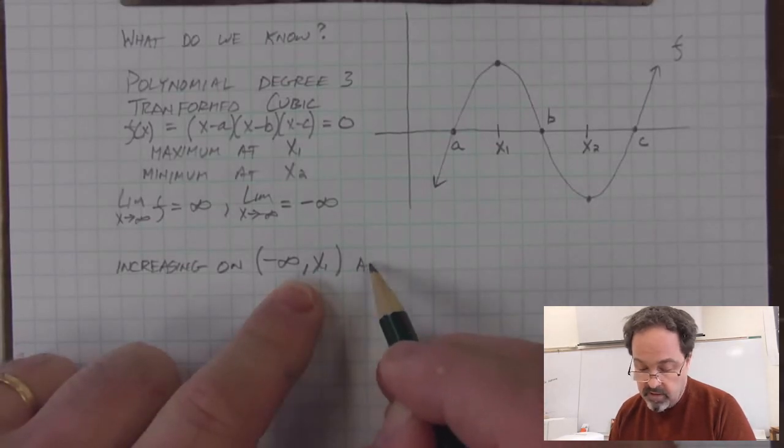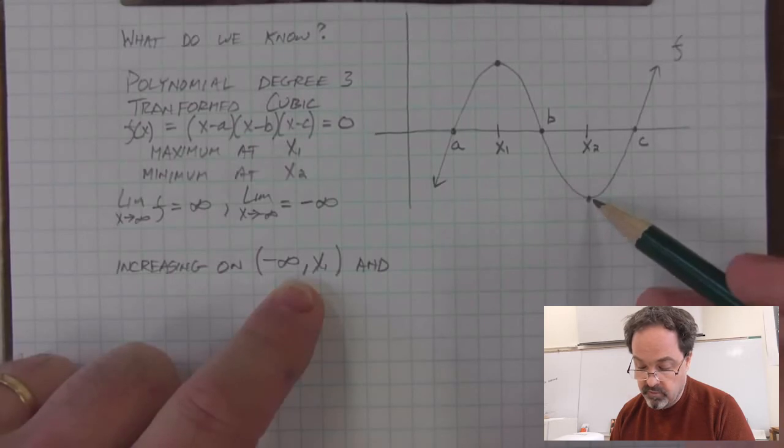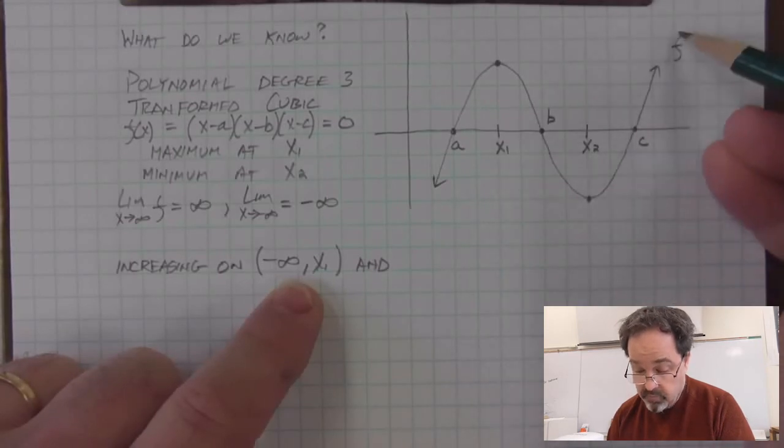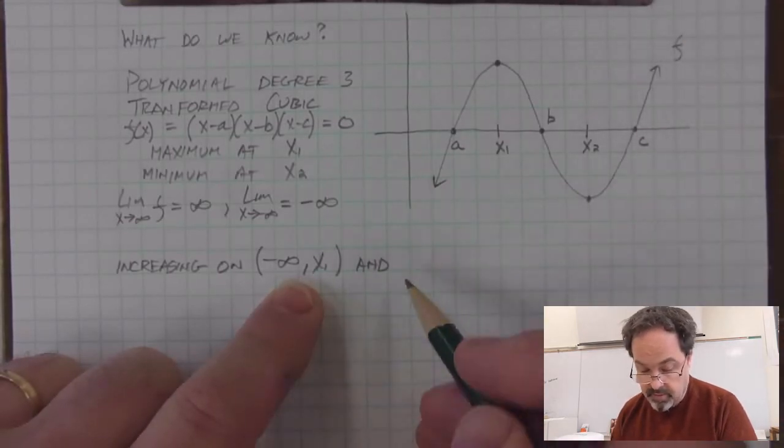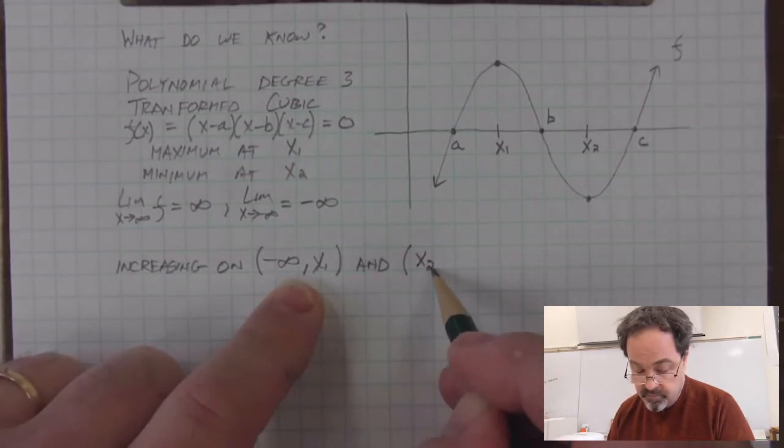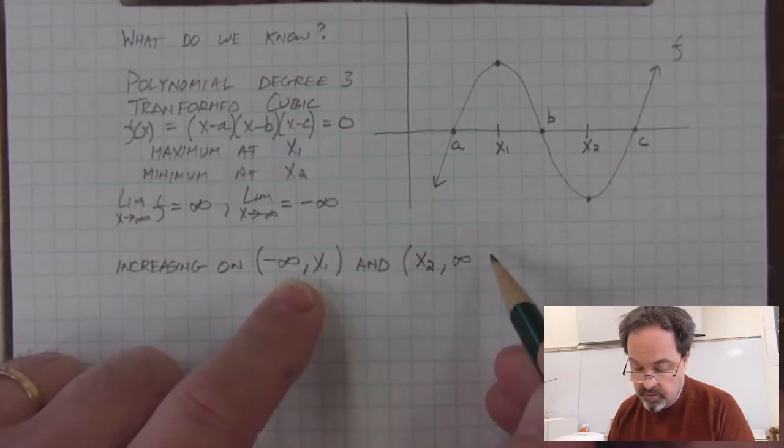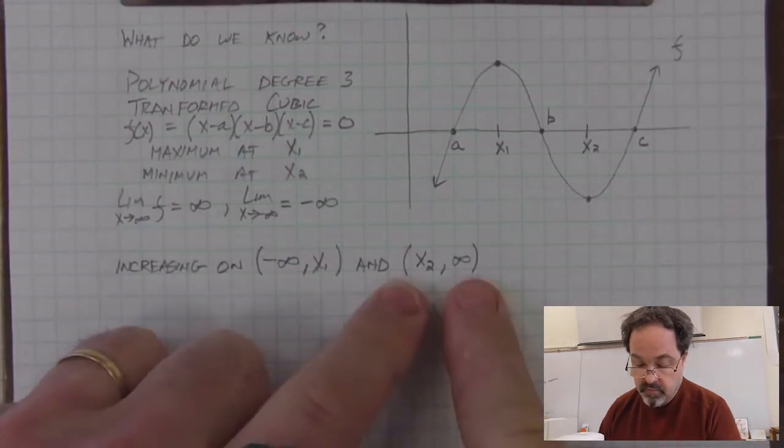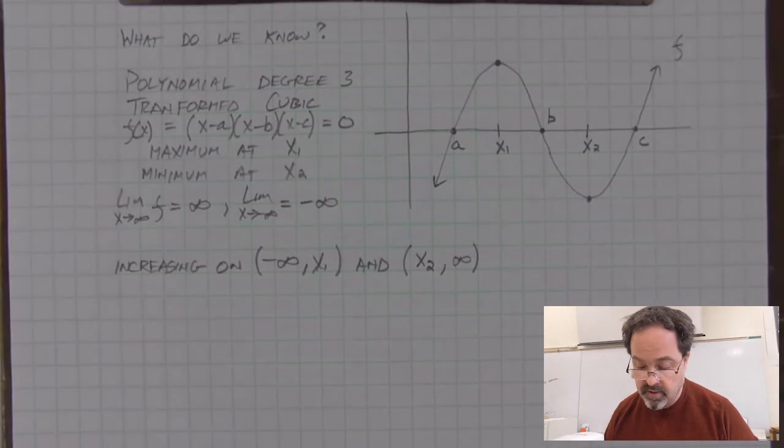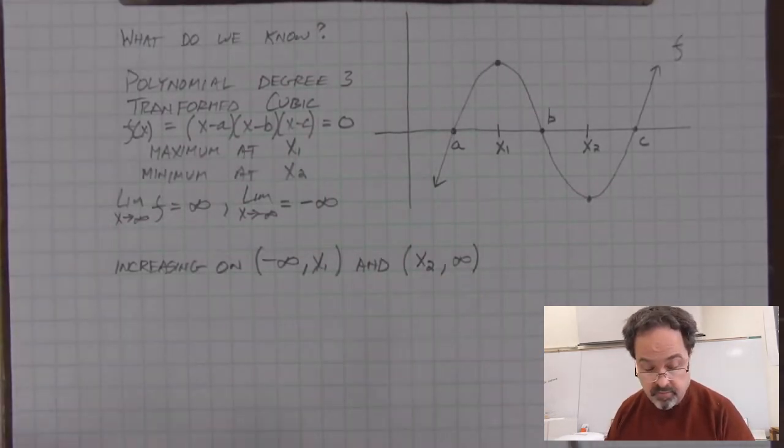And there is a second interval in which the function is increasing from this location here at x sub 2. And then afterwards, the function is going up. So we could say the interval notation that begins at x sub 2 and continues to infinity. And of course, this isn't a point where we're using rounded parentheses for this interval to suggest that it's increasing between but not precisely at those endpoints.